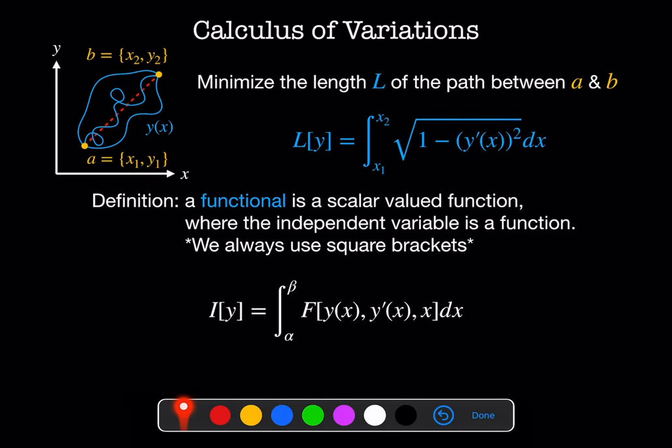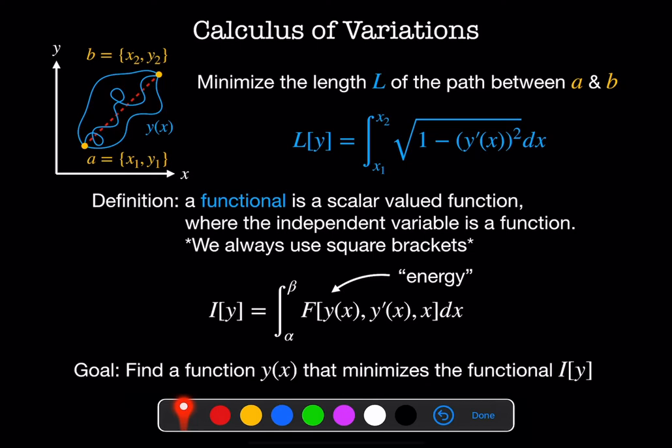So here we have functions y of x and the variable y. This functional, f, is often something like an energy. So for instance, in the soap film example, the energy would be surface tension, which is surface area times some energy per unit area, and that's the thing we're trying to minimize. The goal is to find a function y that minimizes this functional I.